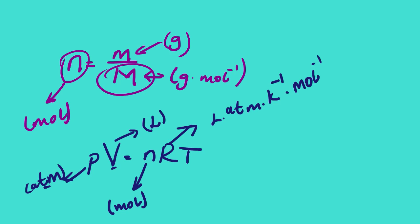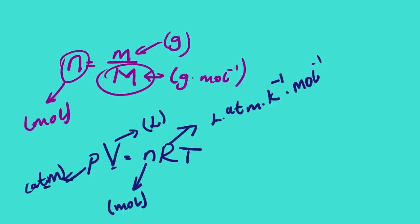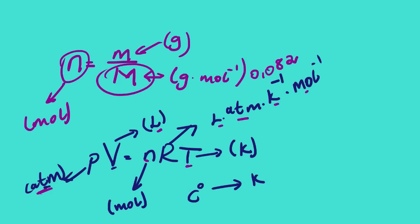The SI unit for R is liter·atm per kelvin per mole. This tells you each SI unit required: pressure must be in atm, volume in liters, and temperature in kelvin. Using these units, the value of R is 0.082 L·atm/(K·mol). To convert from degrees Celsius to kelvin, simply add 273 to the Celsius value.